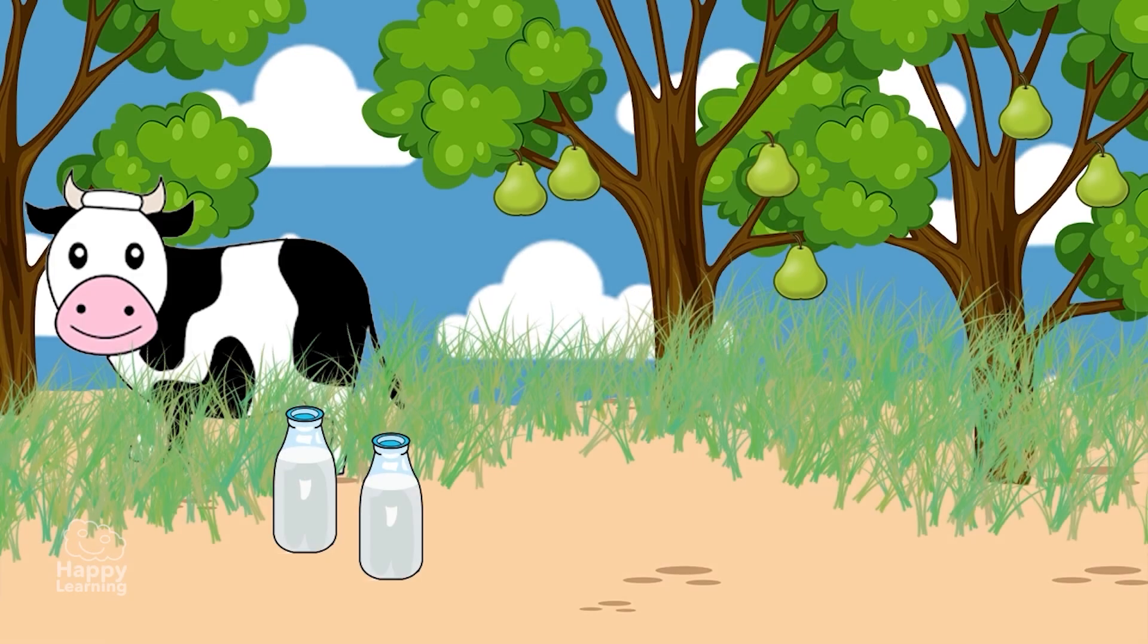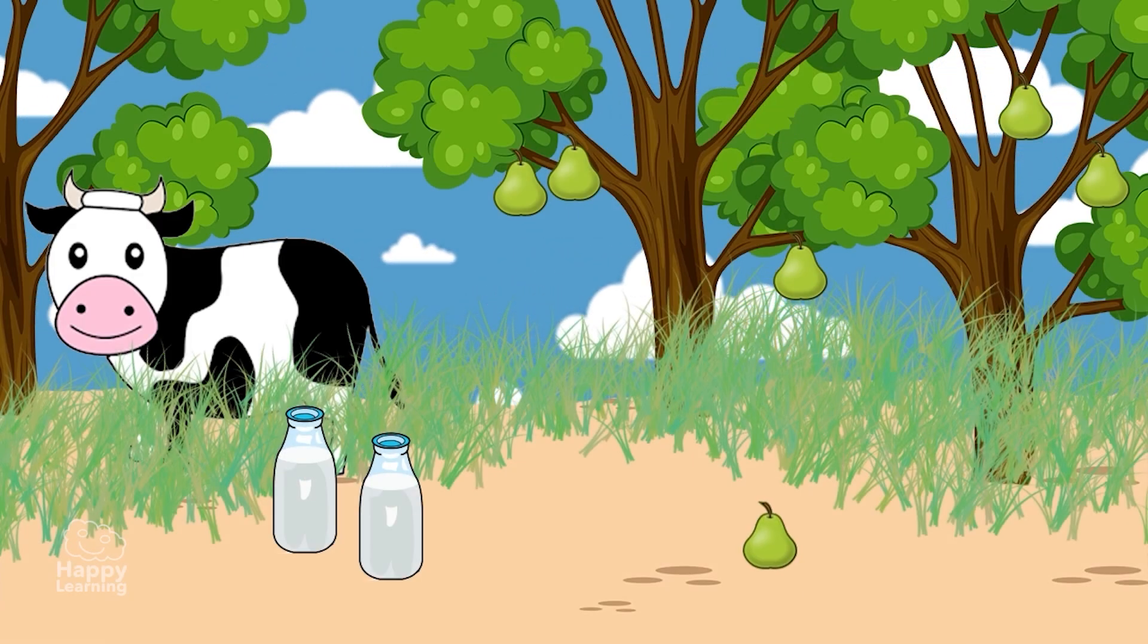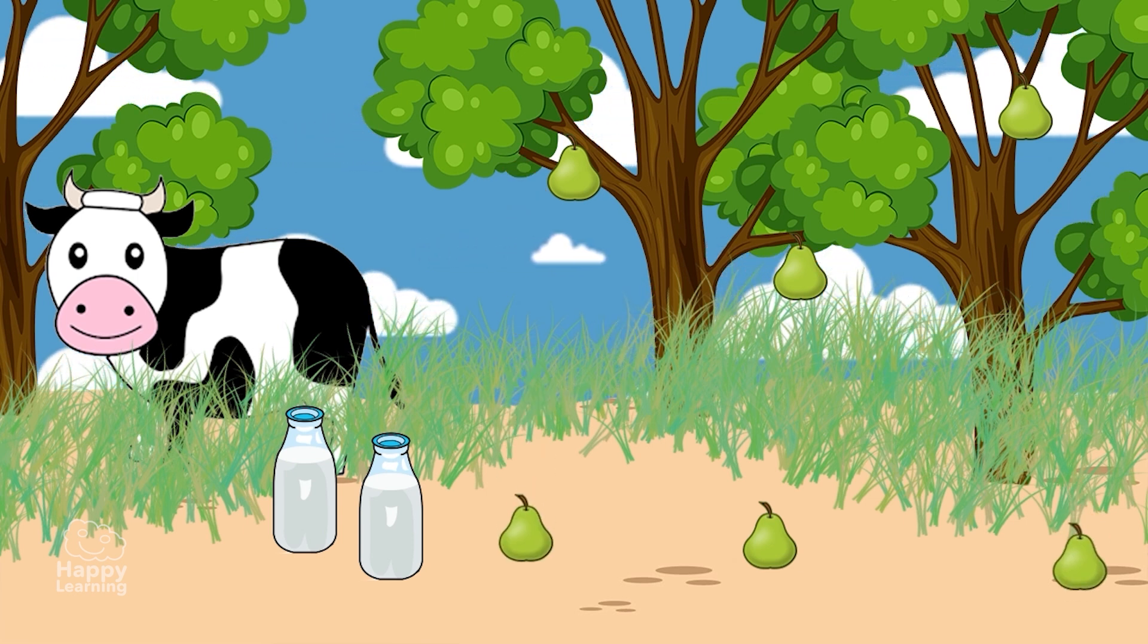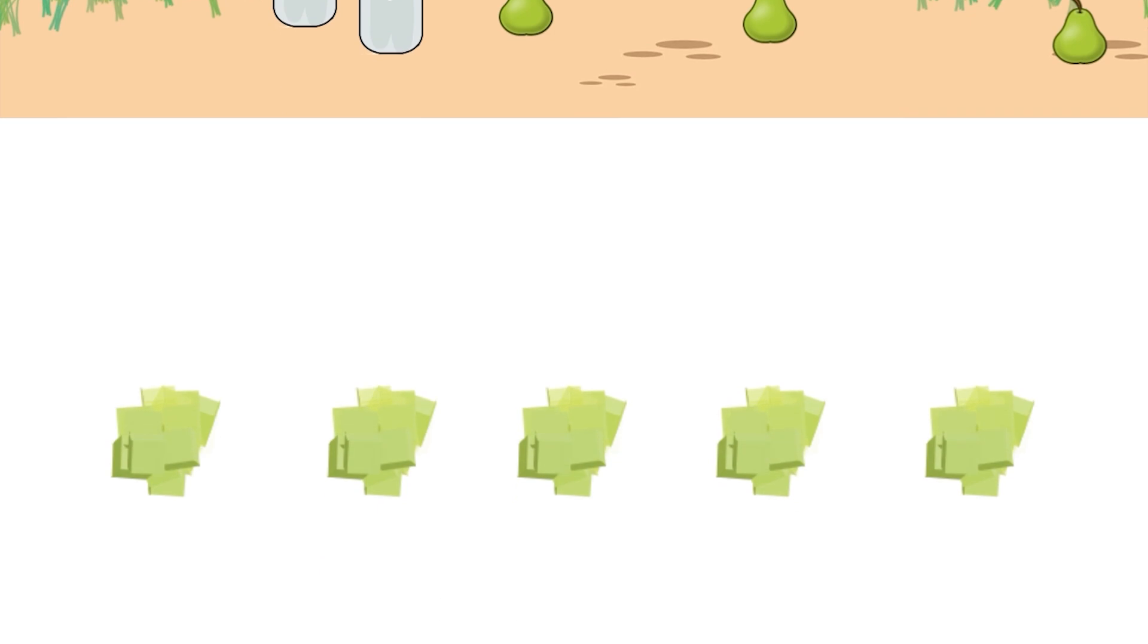For example, milk is liquid and white, in comparison to a pear which is sweet. They are very different from each other, but both equally yummy!